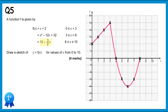The final section is 12 minus (3/2)x for x values from 8 to 10. Substituting x=8: 12 minus 12 gives 0 — we already have that point. For x=9: 12 minus 13.5 gives -1.5. For x=10: 12 minus 15 gives -3. So the final point is (10, -3) and we connect those up with a straight line. That's our finished function.